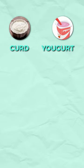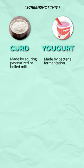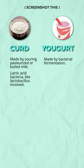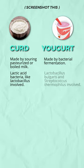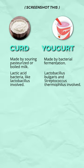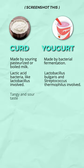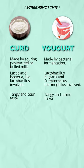Curd is made by souring pasteurized or boiled milk, while yogurt is made by bacterial fermentation. Lactic acid bacteria like Lactobacillus is involved in curd formation, whereas Lactobacillus bulgaricus and Streptococcus thermophilus are involved in yogurt formation. Curd has a tangy and sour taste, while yogurt gives a tangy and acidic flavor.